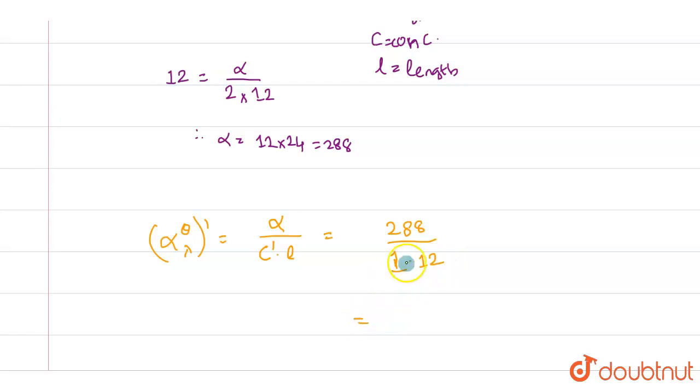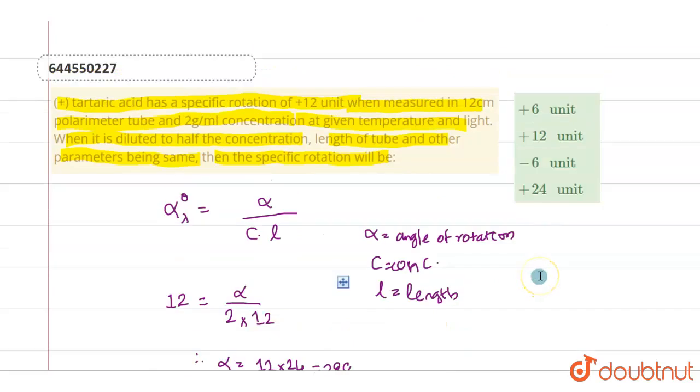From this we can find alpha prime. It equals 288 divided by 12, which equals plus 24 units. So the answer is plus 24 units.